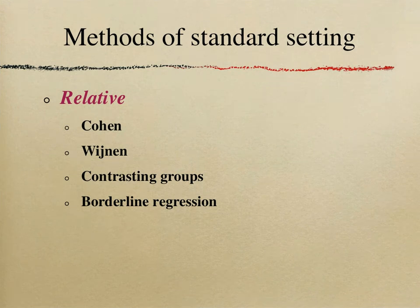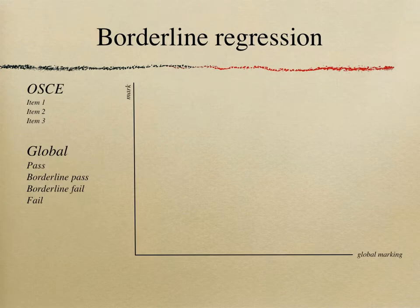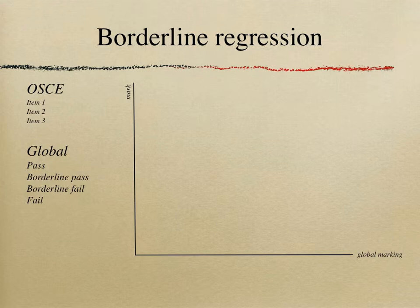There is also the borderline regression method, which uses a similar principle. Again, imagine you are at an OSCE station with three items, giving objective marks as an examiner. You are also asked to make a global judgment of the examinee: clear pass, clear fail, borderline pass, or borderline fail. The key point about borderline regression is that you need a minimum number of categories for your global marking — four is really the minimum, and some people add a fifth category such as distinction.